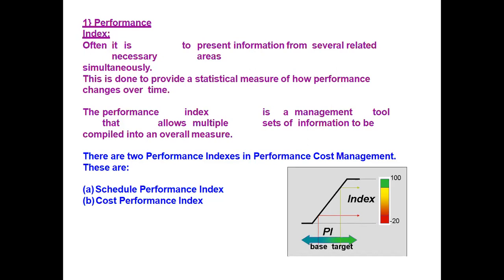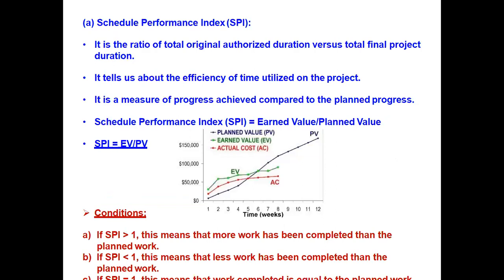Schedule performance index is the ratio of total original authorized duration versus total final project duration. Schedule performance index is relevant with time — it tells us about the efficiency of time utilized on the project.